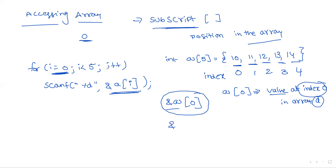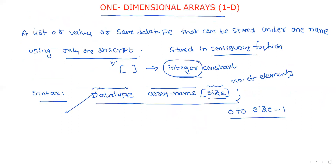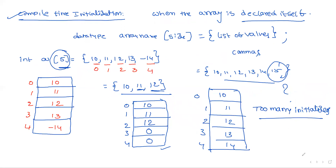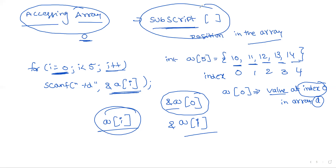Each iteration stores the value at the next index: index 1, index 2, index 3, and so on. Using a printf statement prints the value at each particular index. This is the complete concept of a one-dimensional array: declaration, compile-time or runtime initialization, and accessing elements using one subscript with one for loop. In the next session we will move to two-dimensional arrays.